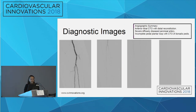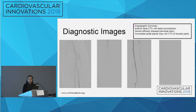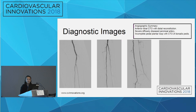These are our diagnostic images. On the image on the left, we see CTO of the anterior tibial with distal reconstitution of flow. We have a severely diffusely diseased peroneal artery. And in the far picture on the right, you see an incomplete plantar loop with CTO of the dorsalis pedis.